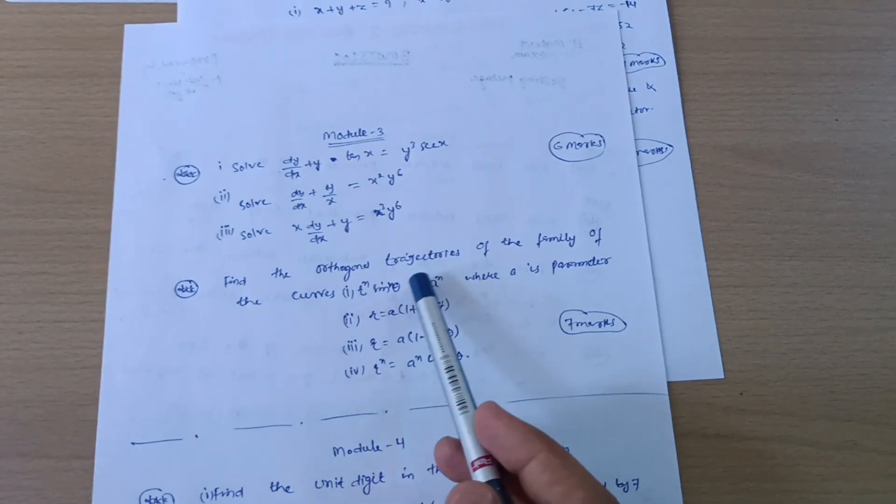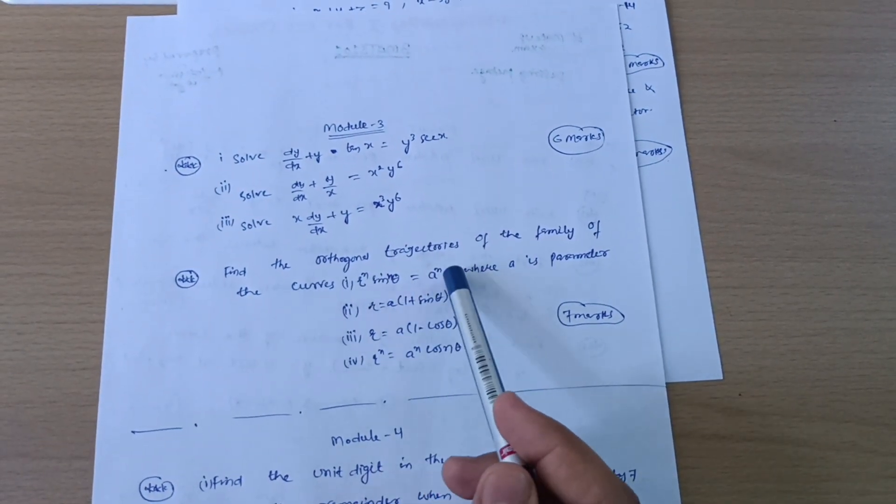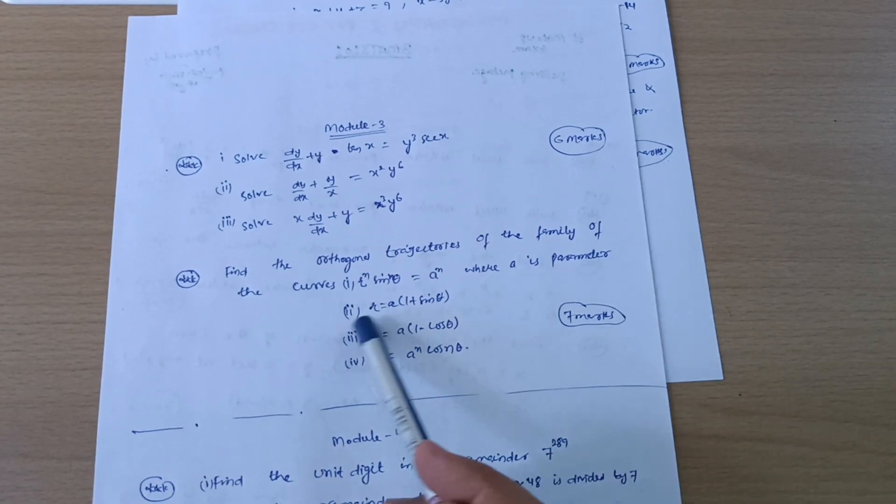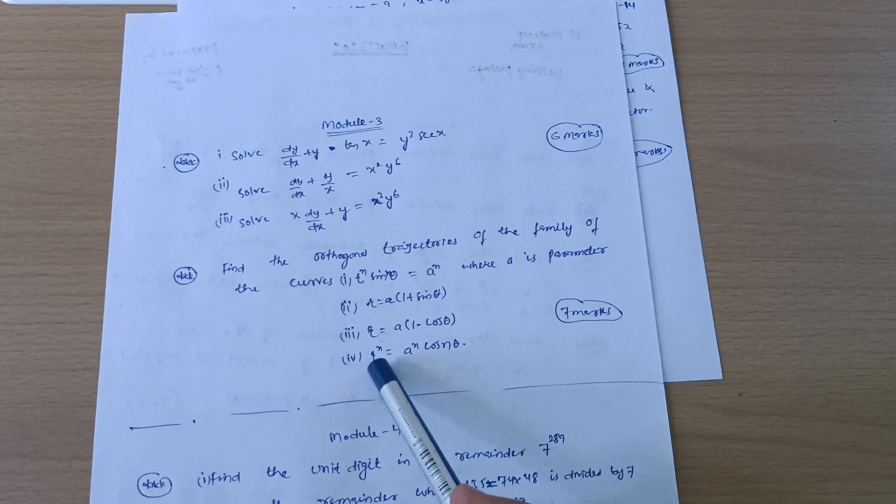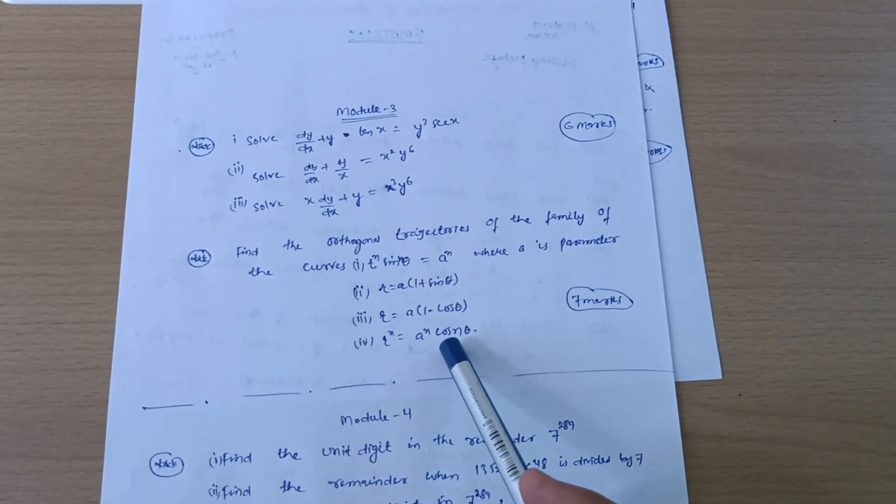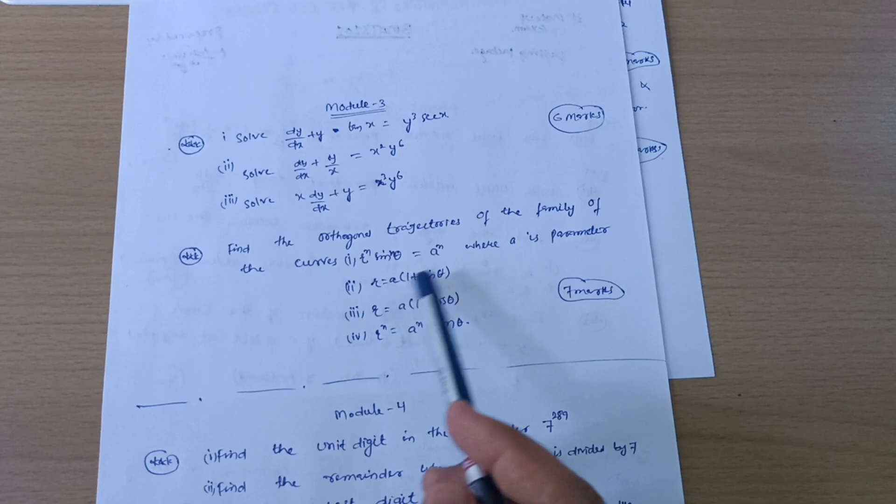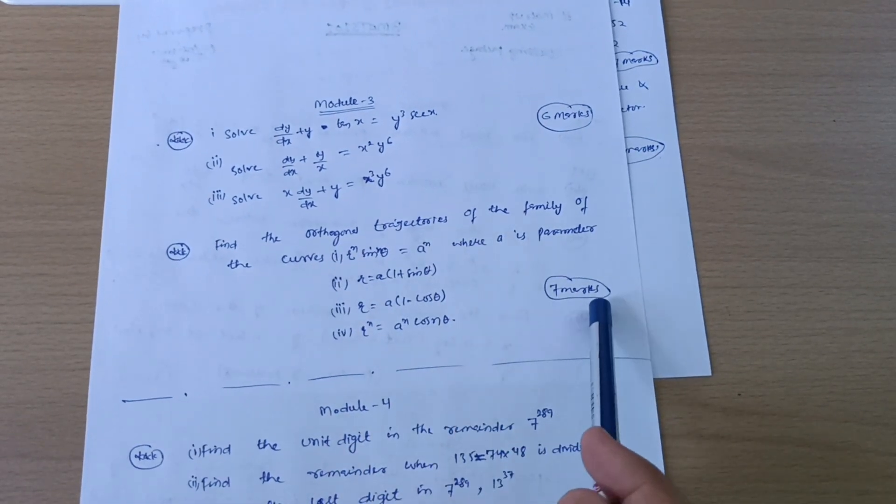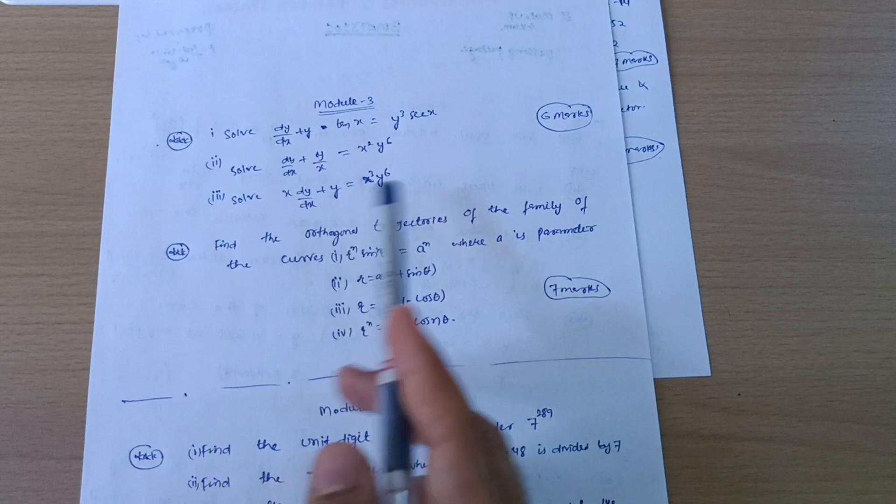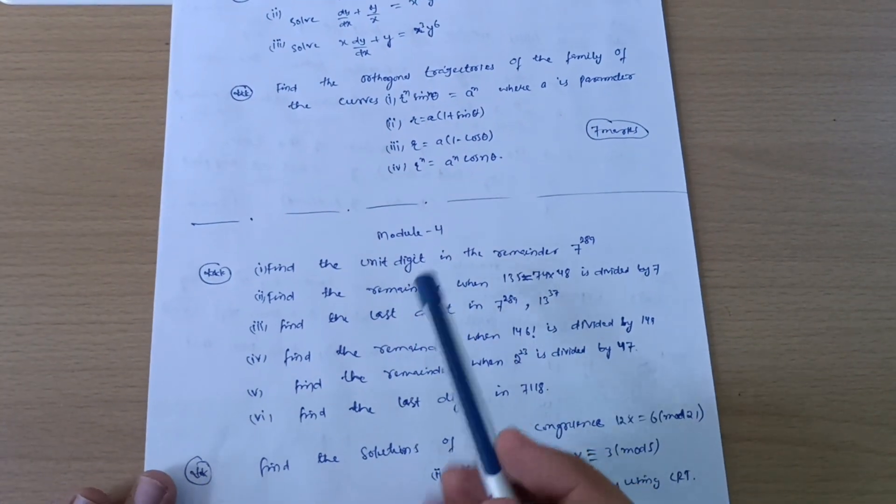Next we have find the orthogonal trajectories of the family of the curves, that is r to the n sine of n theta is equal to a power n where a is the parameter, and second one r is equal to a times 1 plus sine theta, r is equal to a times 1 minus cos of theta, r to the n is equal to a to the power n cos of n theta. These four you should surely go, you should surely refer these four questions on orthogonal trajectories. This carries seven marks, so at least you will get 13 marks from module third.